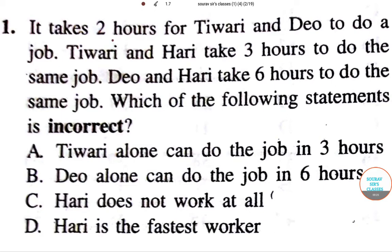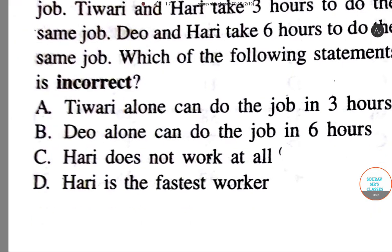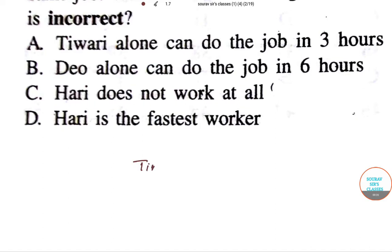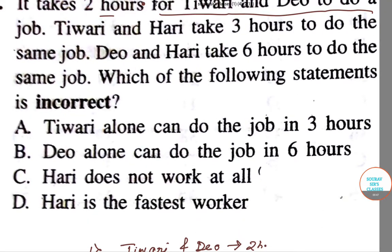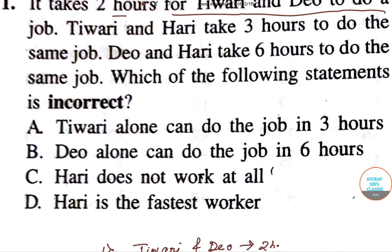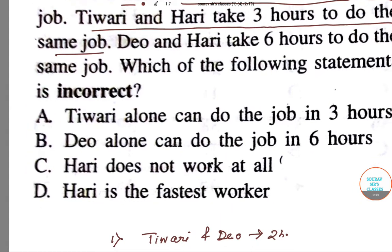The first condition is: Tiwari and Dio together take two hours to do the job. The second condition is: Tiwari and Hari take three hours to do the same job.